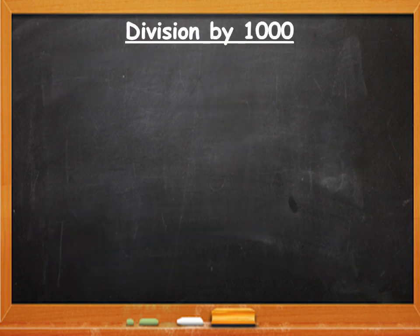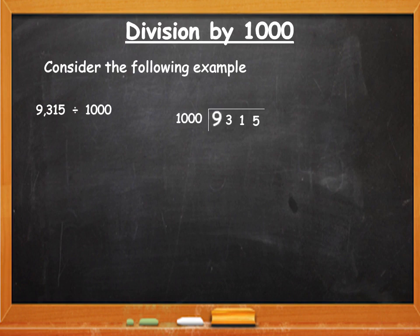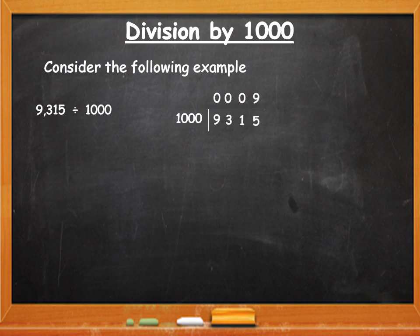Now let's see what happens when we divide by 1,000. Consider the example: 9,315 divided by 1,000. Write the dividend and divisor. Can you divide 9? No — it is less than 1,000, so write a 0. 93 is also less than 1,000, so write a 0 again. 931 is also less than 1,000, so write a 0, then divide 9,315 by 1,000. 1,000 will go 9 times; 1,000 nines are 9,000. Subtract — remainder is 315. Quotient is 9 and remainder is 315.